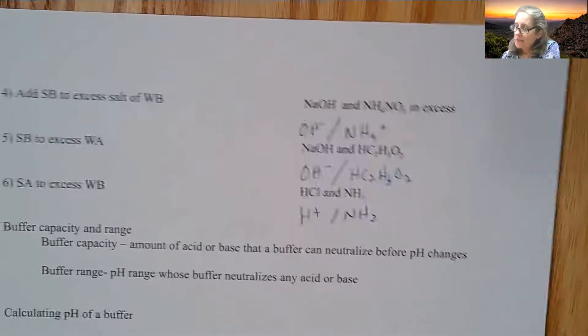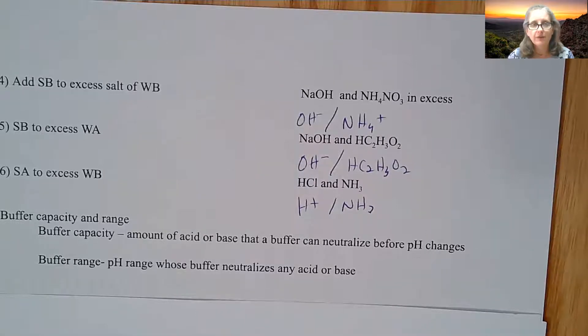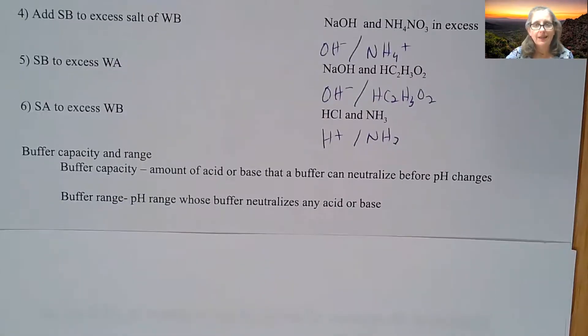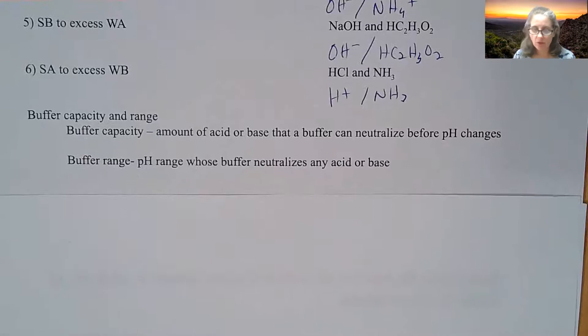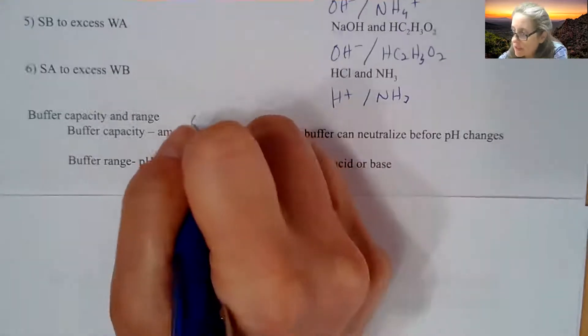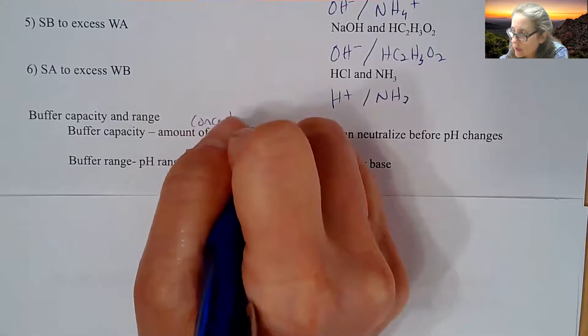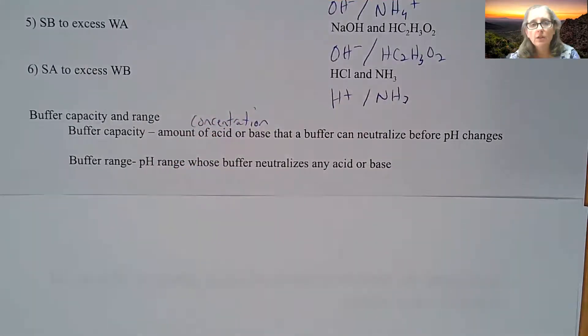With these buffers that we're talking about, we have something called buffer capacity and buffer range. Buffer capacity has to do with the amount of acid or base that a buffer can neutralize before the pH changes. This is going to depend upon concentration of how much you have in there. There's going to be a point at which you start adding an acid to a base or a base to a buffer and it's going to completely change its pH.